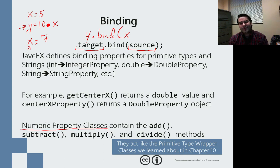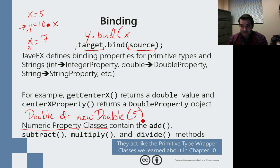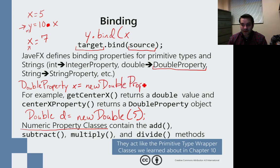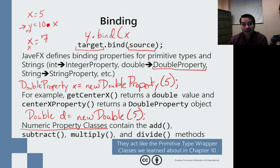These are a little unusual, but no different than when we made something like double d equals new double. We're doing the exact same thing. The only difference now is instead of double d, we're using something called DoubleProperty. So it becomes: DoubleProperty x equals new DoubleProperty, and we can still use that value 5. Assume I've done the same for y, then I can say y is this and x.multiply(10).